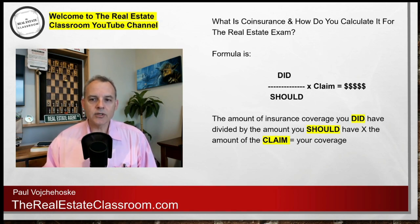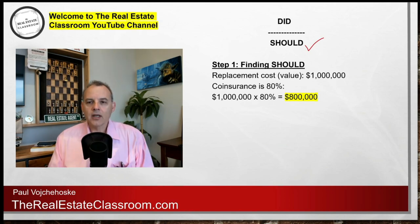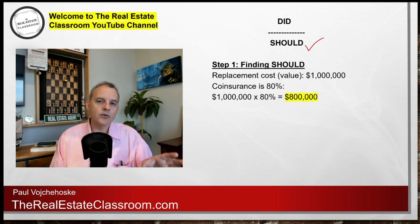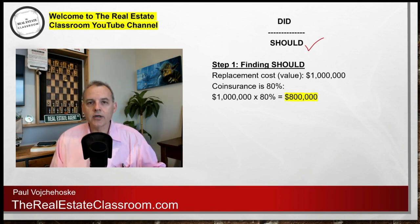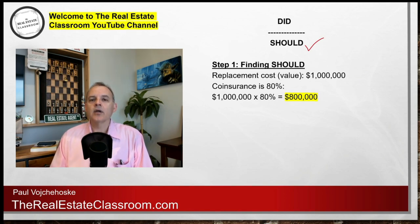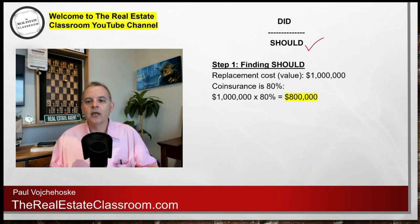Let's put this into practical terms and add some numbers to this formula. Step one: we have to find out what is the required amount of coinsurance coverage. In our example, the replacement cost of this commercial building — or the market value — is one million dollars, and the coinsurance carrier requires the owner to maintain 80%. So we take one million dollars multiplied by 80%, which gives us a coinsurance coverage of $800,000. That means the coinsurance carrier requires that owner — the 'should' part — to maintain $800,000 in coinsurance coverage.